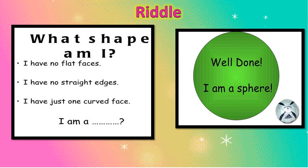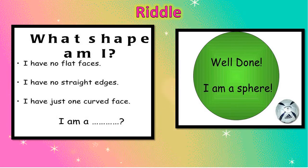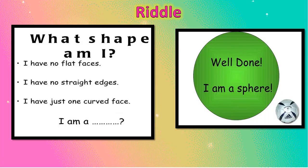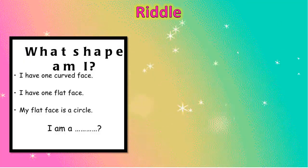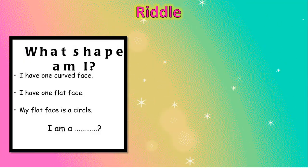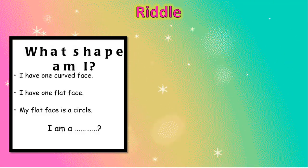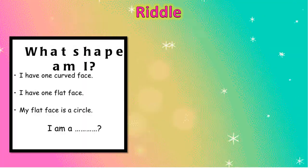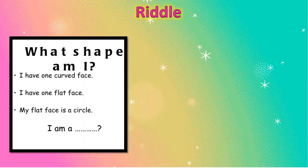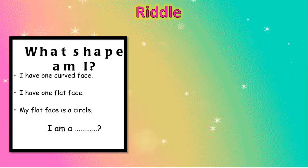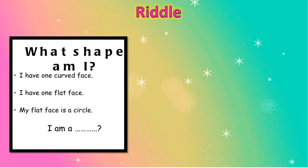You know a sphere is round and round and has only one curved face — it looks like your football or the Earth. Now here is your second riddle. What shape am I? I have one curved face and one flat face, and my flat face is a circle. I am a... now you are guessing which shape has one curved face and one flat face.